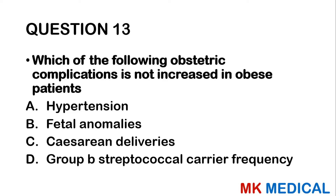Question 54: The progesterone of choice in emergency contraception is: A — DMPA (Depo-Provera). B — levonorgestrel. C — norgestrel. D — micronized progesterone. In Plan B emergency contraception, the drug used is levonorgestrel. The answer is B.